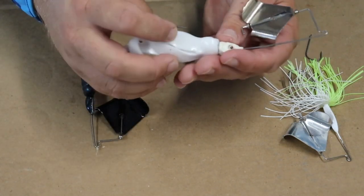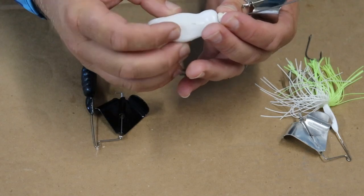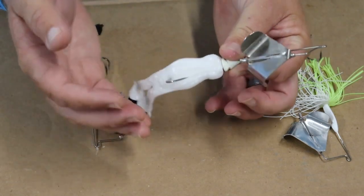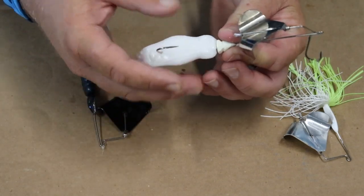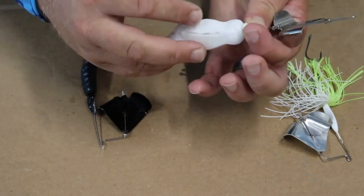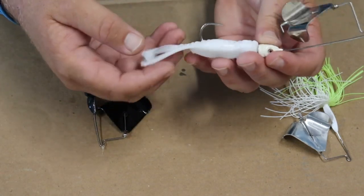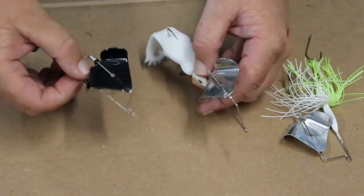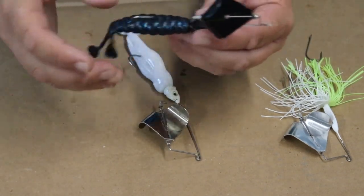Okay, so this right here is the Z-Man Goat Toads. This is a really cool new bait because it's made of Elastec, so it's already super buoyant, which aids in this whole package. It being a topwater bait and everything. It's got this great keeled belly to it. It's got these great kicking legs and all that. Another bait that I use a lot is just the traditional goat.